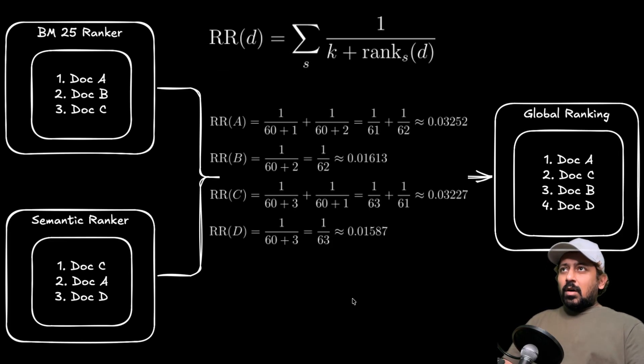So let's see how reciprocal rank works in practice. So this is the same old previous slide - BM25 doc A, B, and C, semantic ranker says doc C, A, and D, and these are the rankings produced by these two ranking functions for one given query. So we define reciprocal rank for a document d as summation over all the rankers and it's 1 over k plus rank of d.